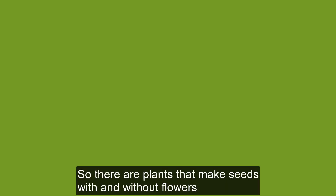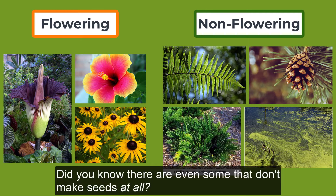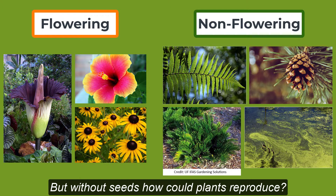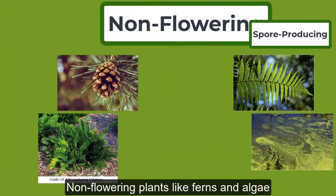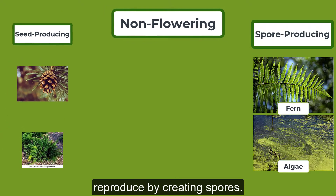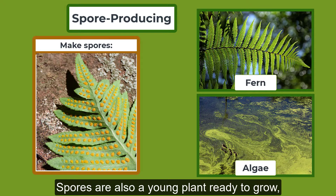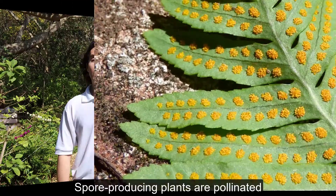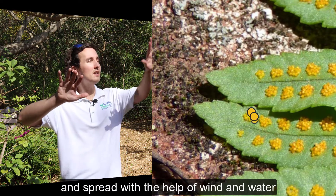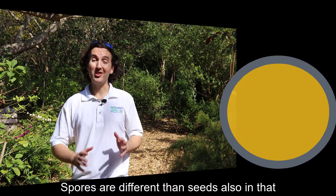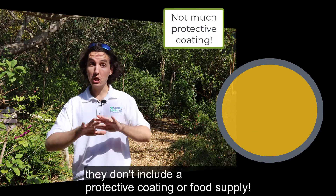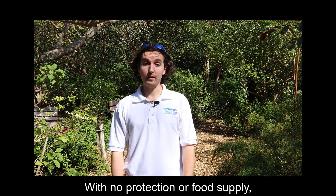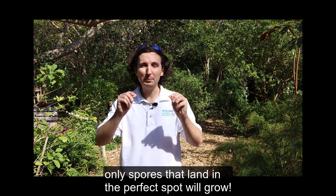So there are plants that make seeds with and without flowers. Did you know that there are even some that don't make seeds at all? Non-flowering plants like ferns and algae reproduce by creating spores. Spores are also a young plant ready to grow, but are made in a different way. Spore-producing plants are pollinated and spread with the help of wind and water. Spores are different than seeds in that they don't include a protective coating or food supply, so only spores that land in the perfect spot will grow.